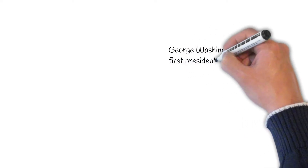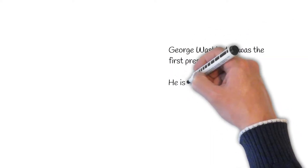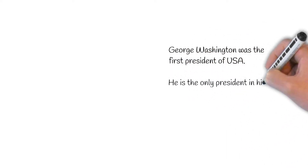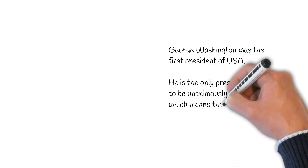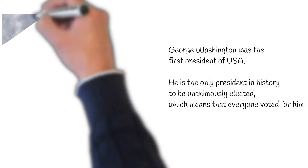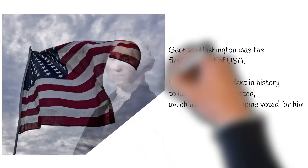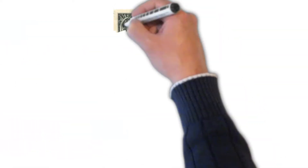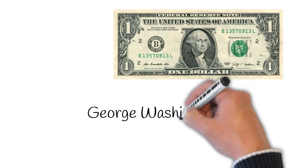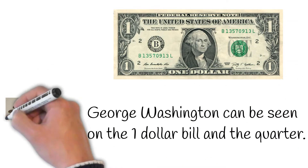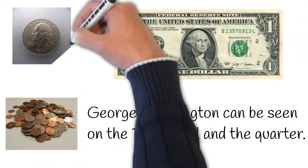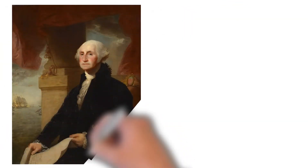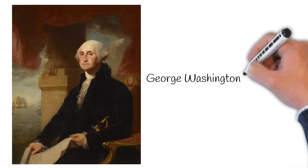George Washington was the first president of the USA. He is the only president in history to be unanimously elected, which means that everyone voted for him. George Washington can be seen on a one-dollar bill and the quarter.